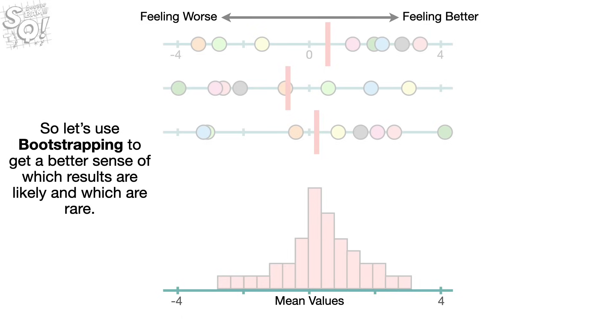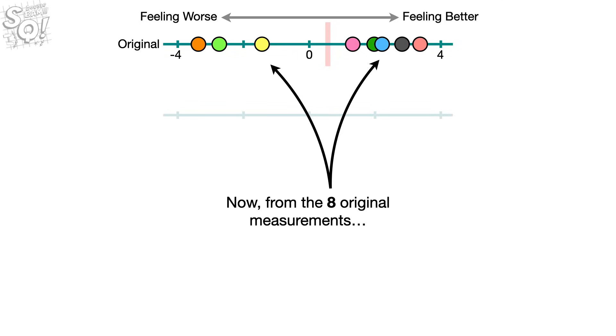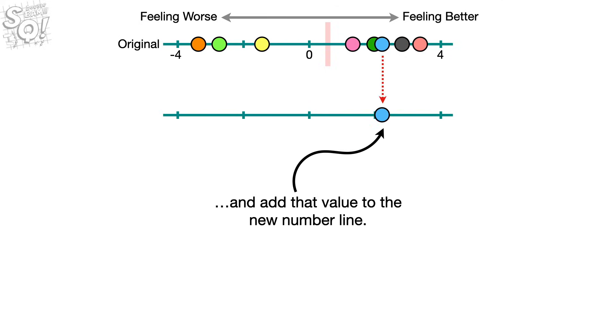So let's use bootstrapping to get a better sense of which results are likely and which are rare. First, let's create a new number line. Now, from the eight original measurements, choose one at random, and add that value to the new number line.